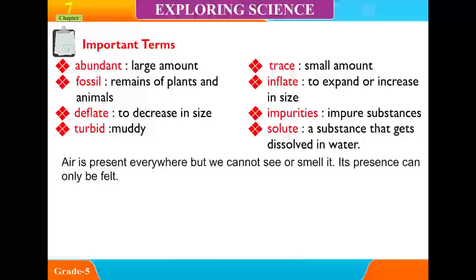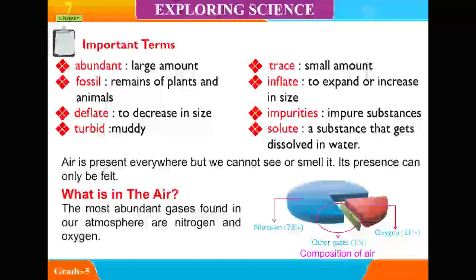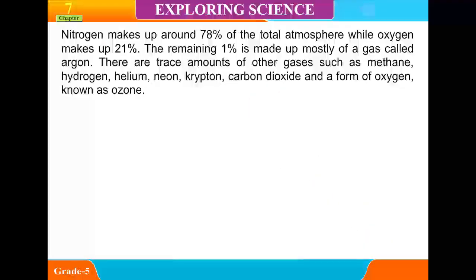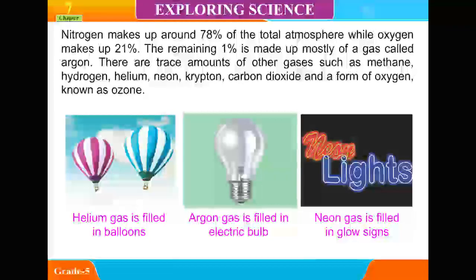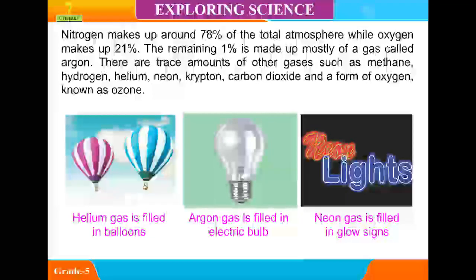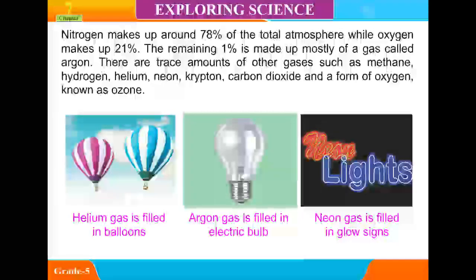Air is present everywhere, but we cannot see or smell it. Its presence can only be felt. The most abundant gases found in our atmosphere are nitrogen and oxygen. Nitrogen makes up around 78% of the total atmosphere, while oxygen makes up 21%. The remaining 1% is made up mostly of a gas called Argon.